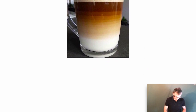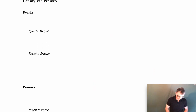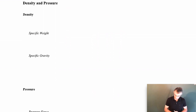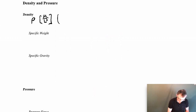We'll start with density. You're probably familiar with the concept from earlier classes. In this class we'll use the symbol rho, and it has dimensions of mass per unit volume, or mass per length cubed. Common units include kilograms per cubic meter, pounds-mass per cubic foot, or slugs per cubic foot.